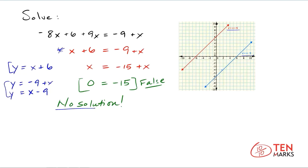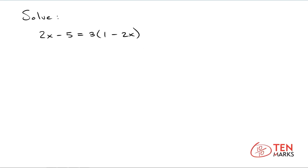Let's try one more problem together. Here you have 2x minus 5 equals 3 times parenthesis 1 minus 2x. Again, you're trying to find the value of x that will satisfy both sides of the equation. Begin by simplifying the right side. You see that you have a factor in front of the parenthesis, which means you're going to use the distributive property. So 3 times 1 is 3, and 3 times negative 2x is negative 6x — and that's how the right side simplifies.